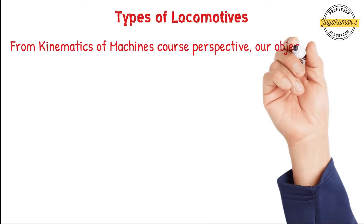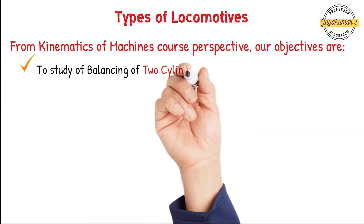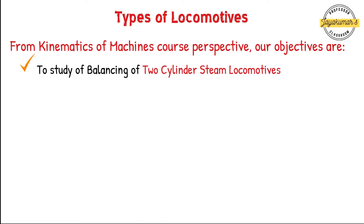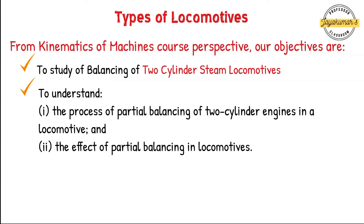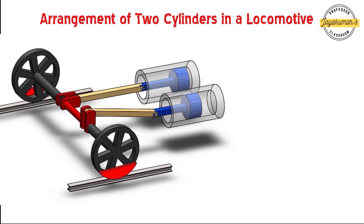Having understood the various types of locomotives, especially from the syllabus of kinematics of machines, our objective is to study the balancing of two-cylinder steam locomotives. Though steam locomotives have become obsolete, from our subject point of view it is very important to understand the process of partial balancing of locomotives. Usually, steam locomotives use two-cylinder engines.